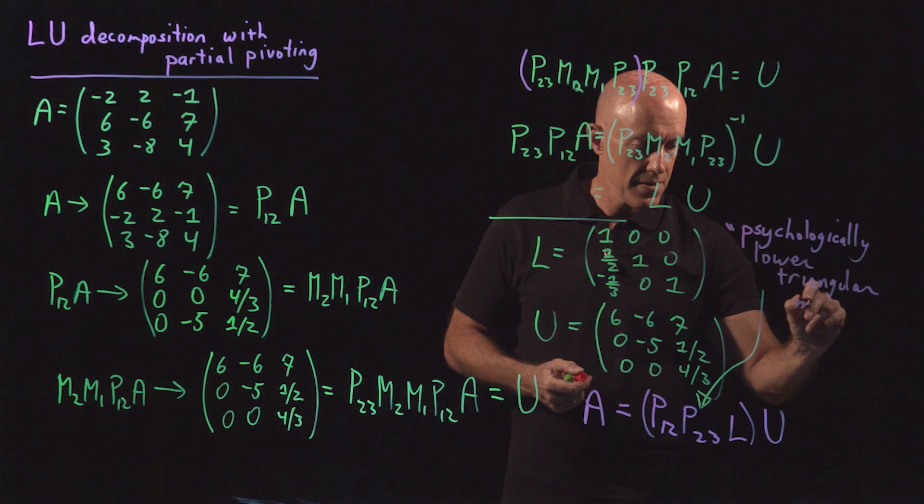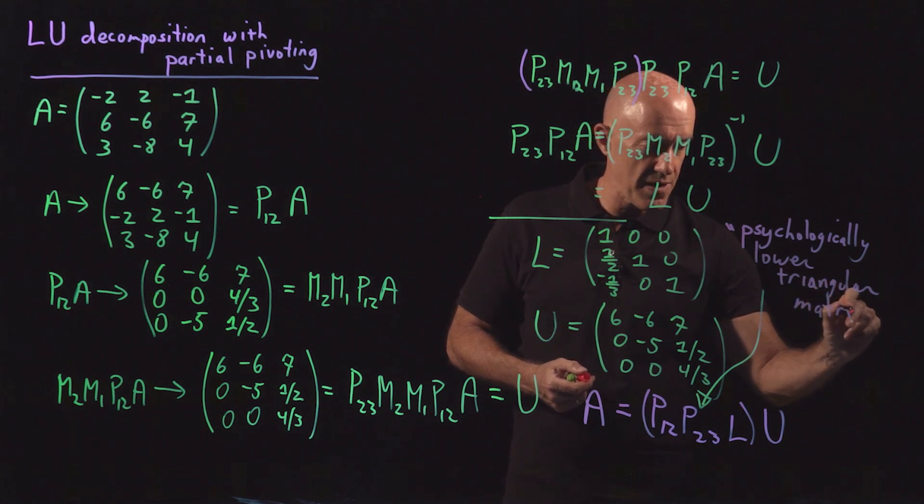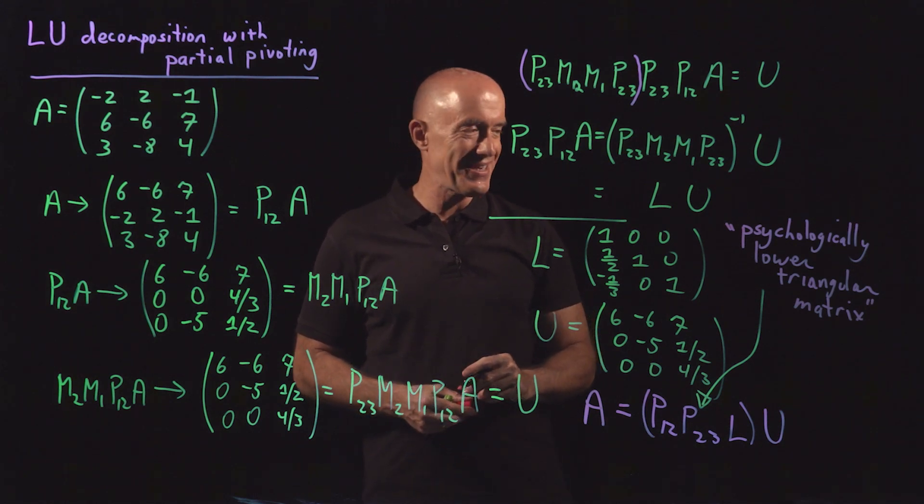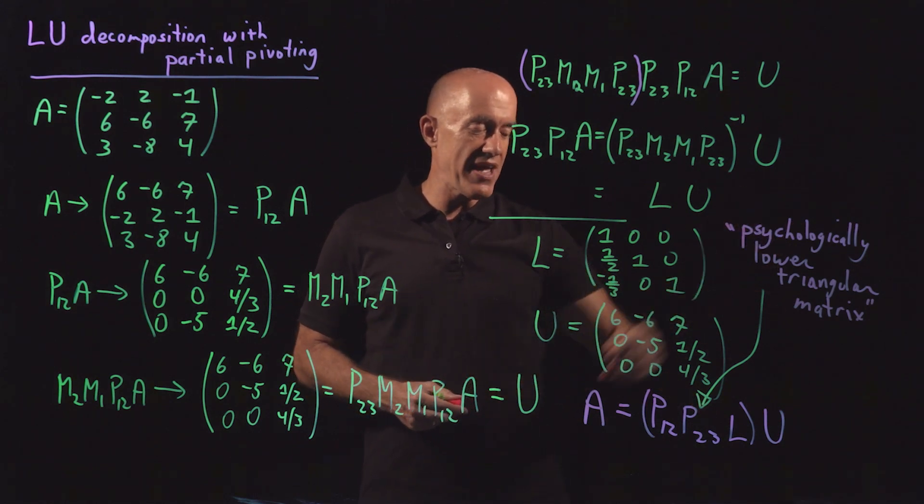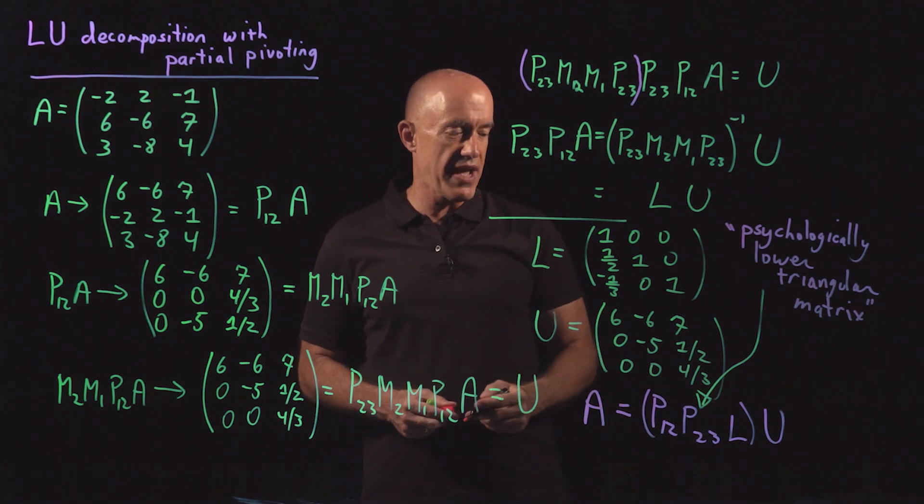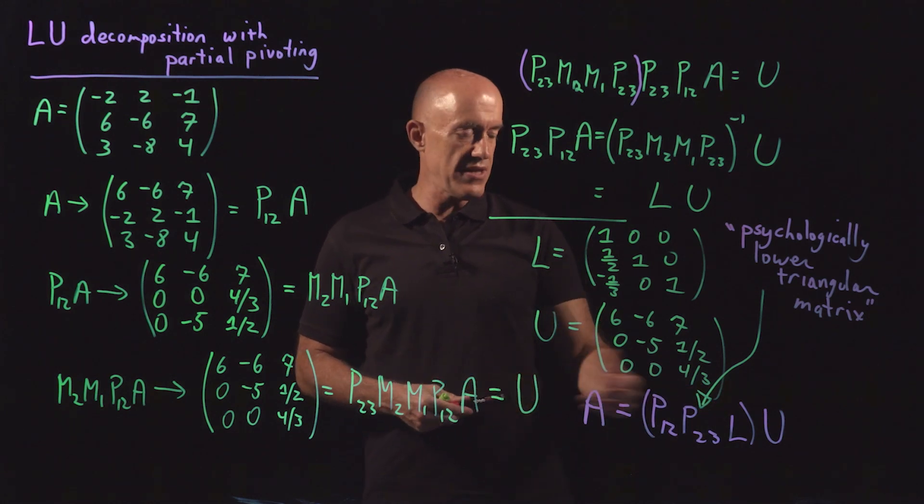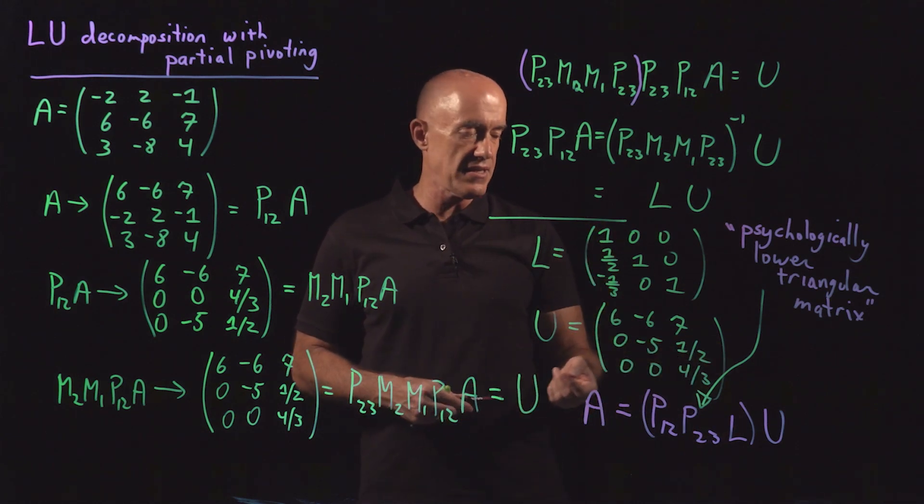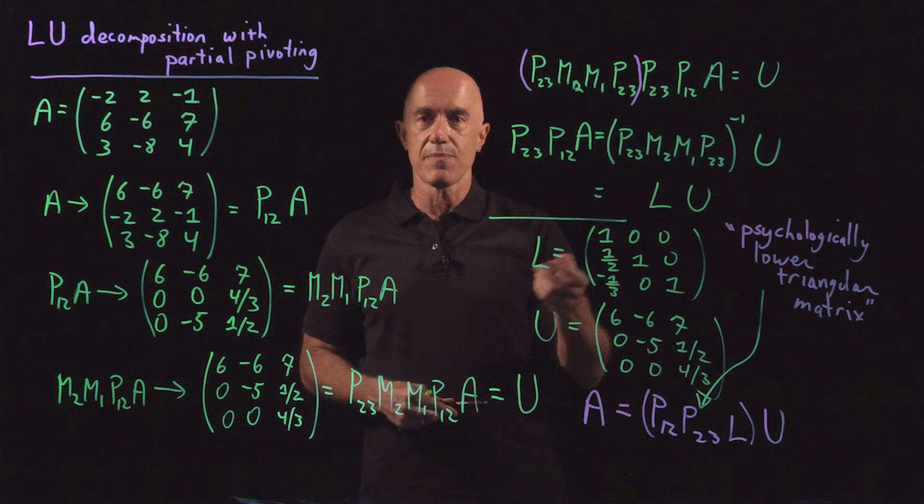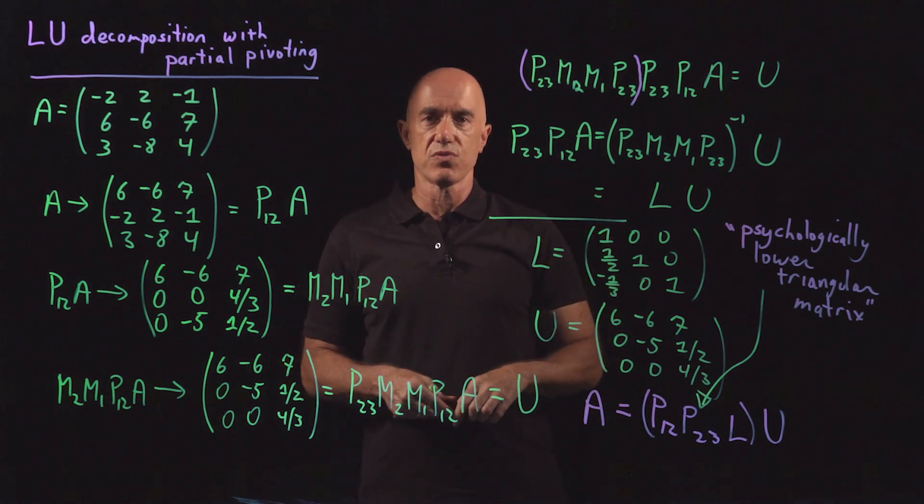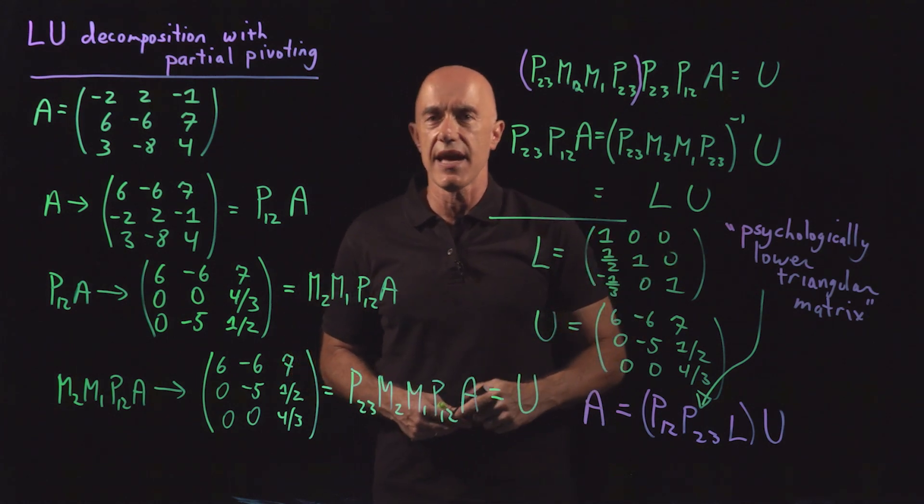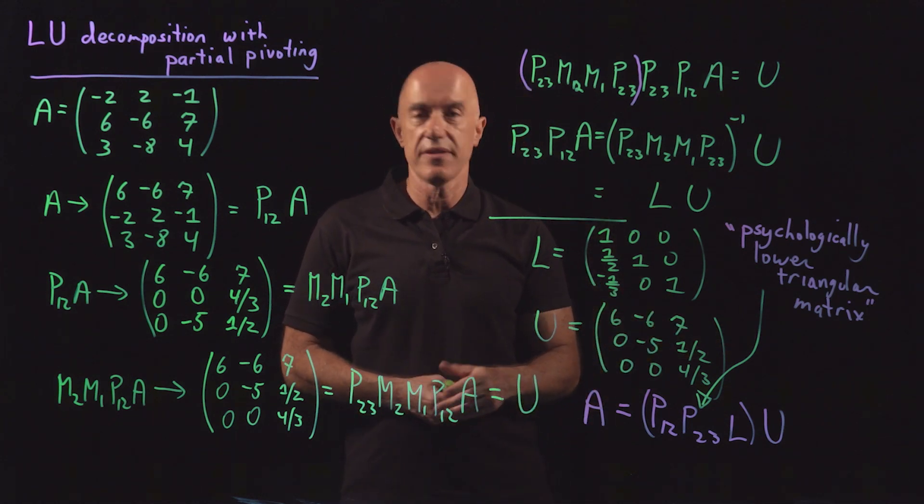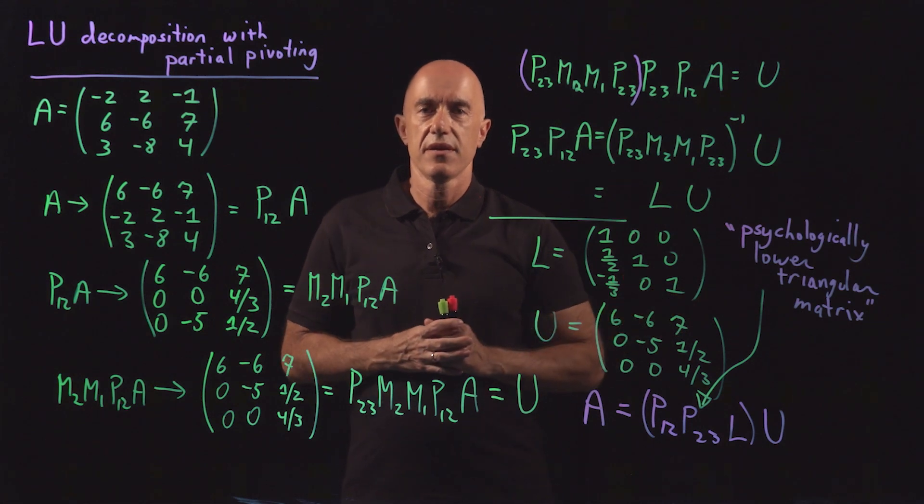If you Google that, you probably go only to MATLAB. And maybe later on you'll go to my notes. But it's a nice phrase. So with a psychologically lower triangular matrix, you can do your forward substitution and backward substitution. It won't be exactly forward substitution because the matrix, the rows will be permutated, but it will be something like that. MATLAB will do all the algebra for us so we don't have to worry about this particular point.